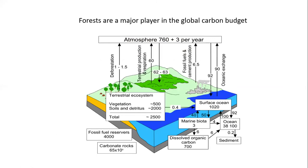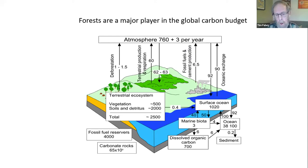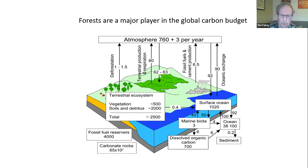This is a diagram from the Intergovernmental Panel on Climate Change, and I wanted to point out the role of forests in carbon storage and flow. These are units of gigatons of carbon, and in the boxes are the amounts of carbon stock in different parts of the Earth. On the lower left, we see terrestrial ecosystems contain about 2,500 gigatons of carbon — a comparable amount to what is in fossil fuel reserves. Most of this is in the trees and in the forest soils.